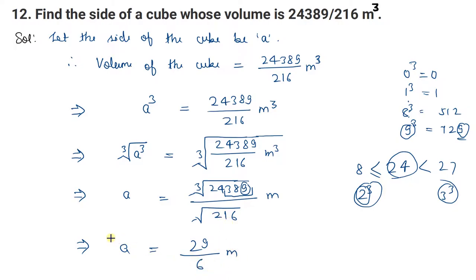So 29 upon 6 meter, this is your answer. Hence the side of the cube is equal to 29 upon 6. If you divide this, it will come in decimal. You can write it in the box.